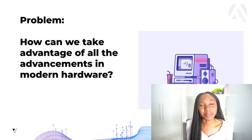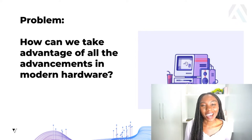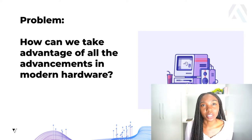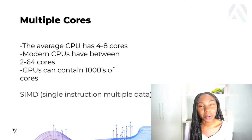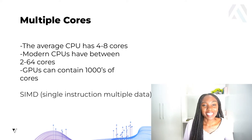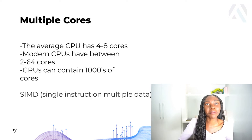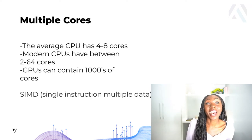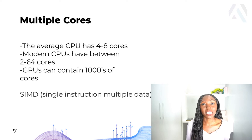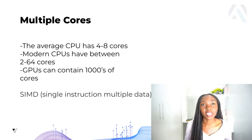The first problem that Arrow solves is how we can take advantage of all the advancements in modern hardware today. We have increasing access to more cores in our computers, and having access to multiple cores allows us to do more work faster. Today, the average CPU has anywhere from four to eight cores. If you have a modern CPU, it can have up to 64 cores. And if you switch completely to GPUs, you can have access to even thousands of cores, which is really helpful if you're running computations that can be run in parallel.